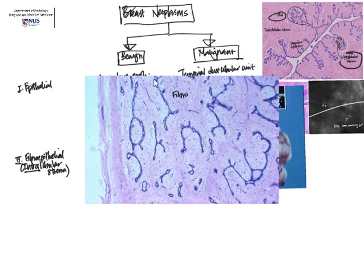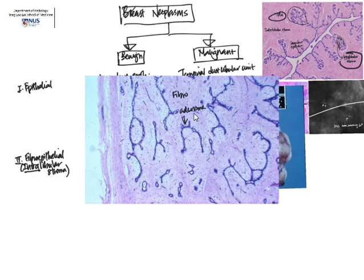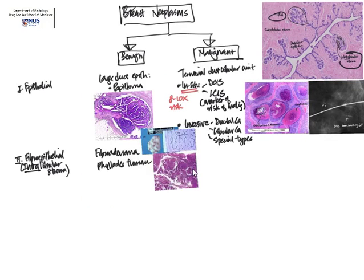On microscopy, we have a clearly biphasic tumor. There is a pink stroma, which is the fibro component of the name, and then slit-like compressed ductal structures, which is the adenoma component — hence fibroadenoma. These are most of the time benign.